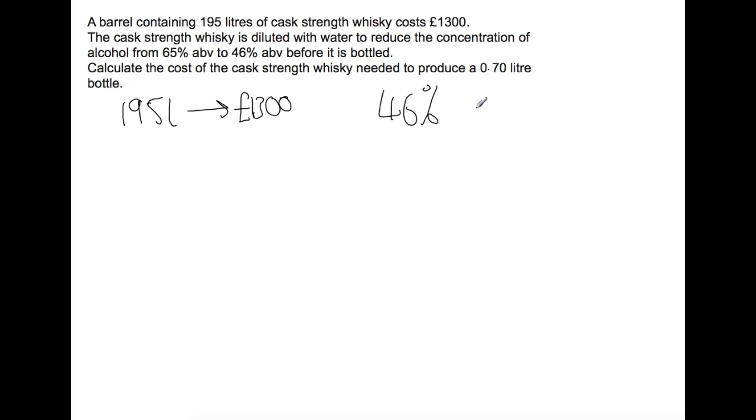So if we do 46% of 0.7 liters, then you find that 0.32 liters of the bottle is alcohol.